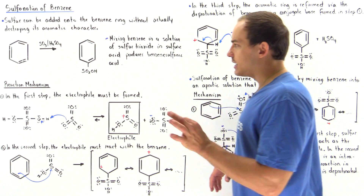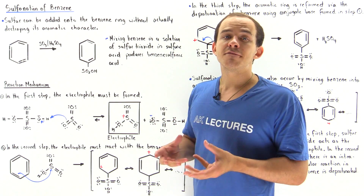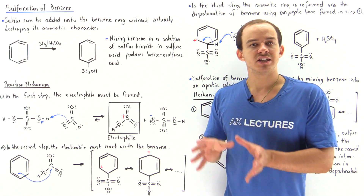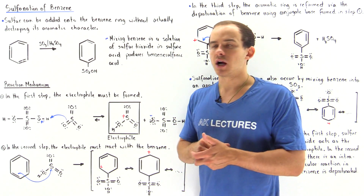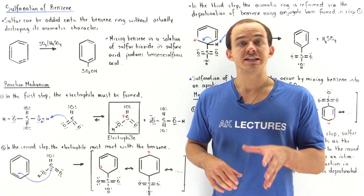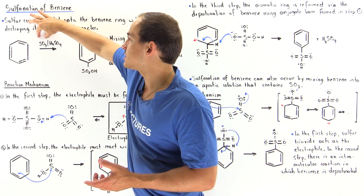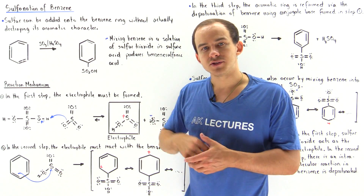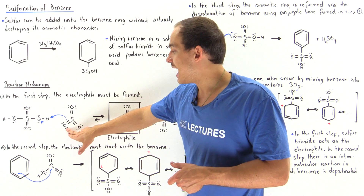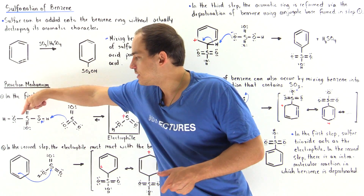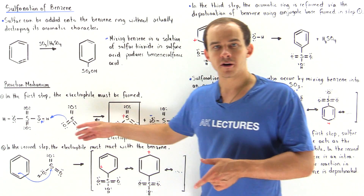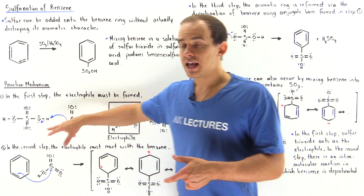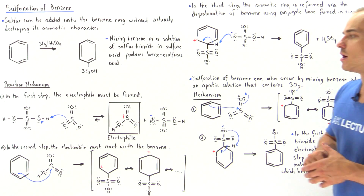There are three important steps in this reaction. In the first step, we have to form our electrophile — the molecule that will bind to the benzene ring, momentarily destroying its aromatic character. The electrophile is formed from our two reactants, sulfur trioxide and sulfuric acid. One of the pi bonds between sulfur and oxygen grabs an H atom off an oxygen of sulfuric acid, forming the electrophile and a conjugate base, which becomes important in the last step.